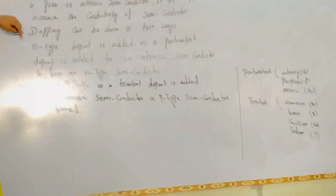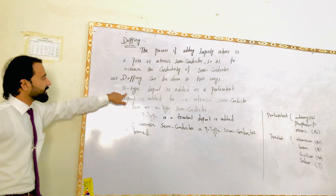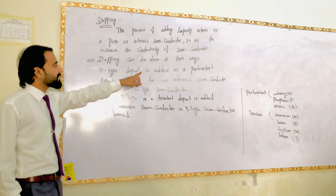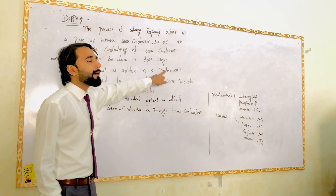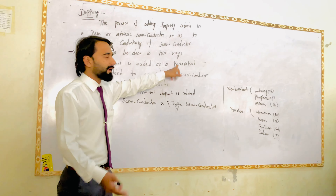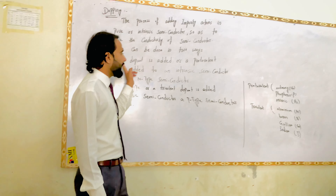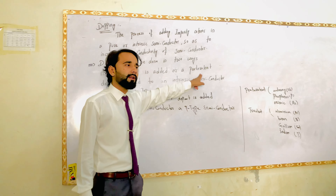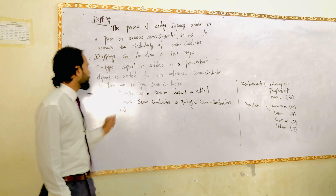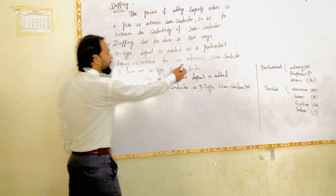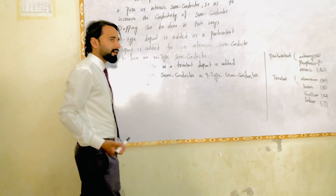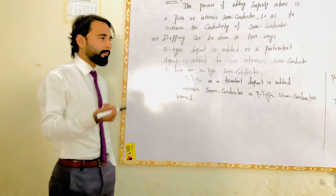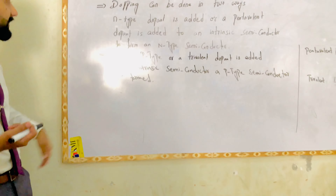If you look at the N-type, pentavalent impurity will be added. N-type and pentavalent are the same — pentavalent is added for N-type. An intrinsic semiconductor is the pure form of a semiconductor.